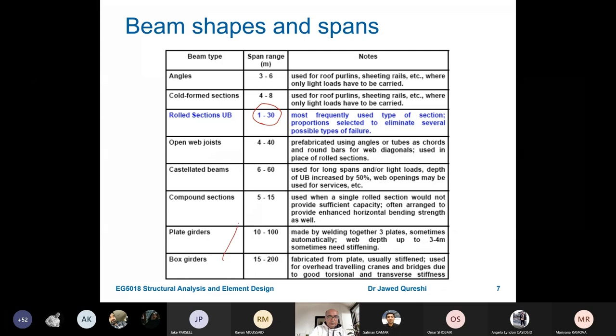And then we have different types of beams. The underlying principle remains the same. Underlying principle is beam is the bending member. So we must check bending.